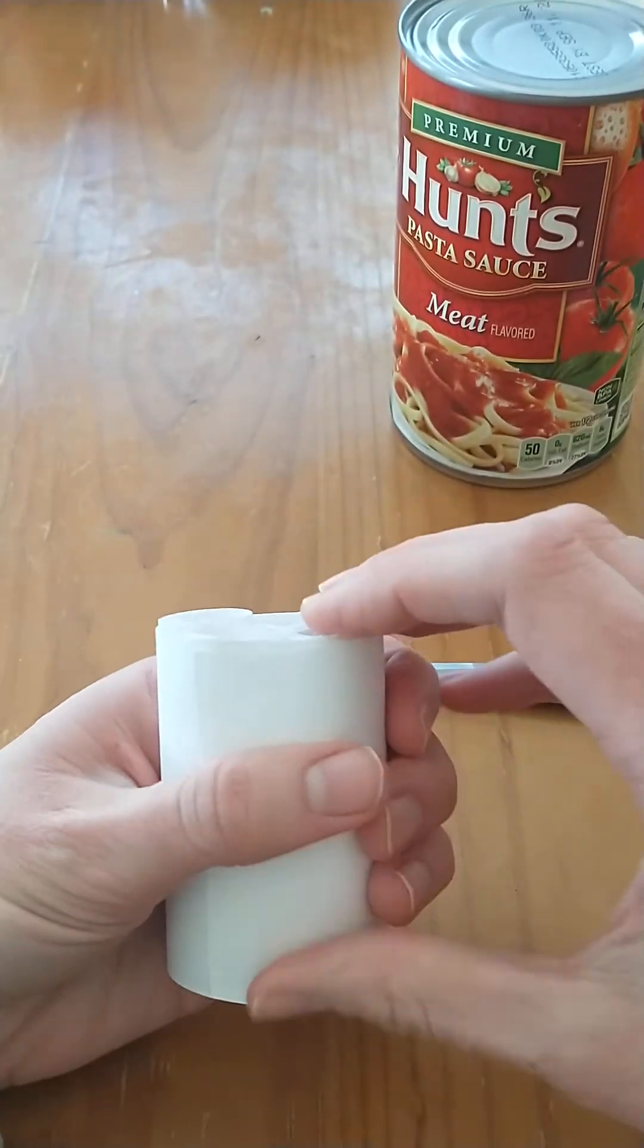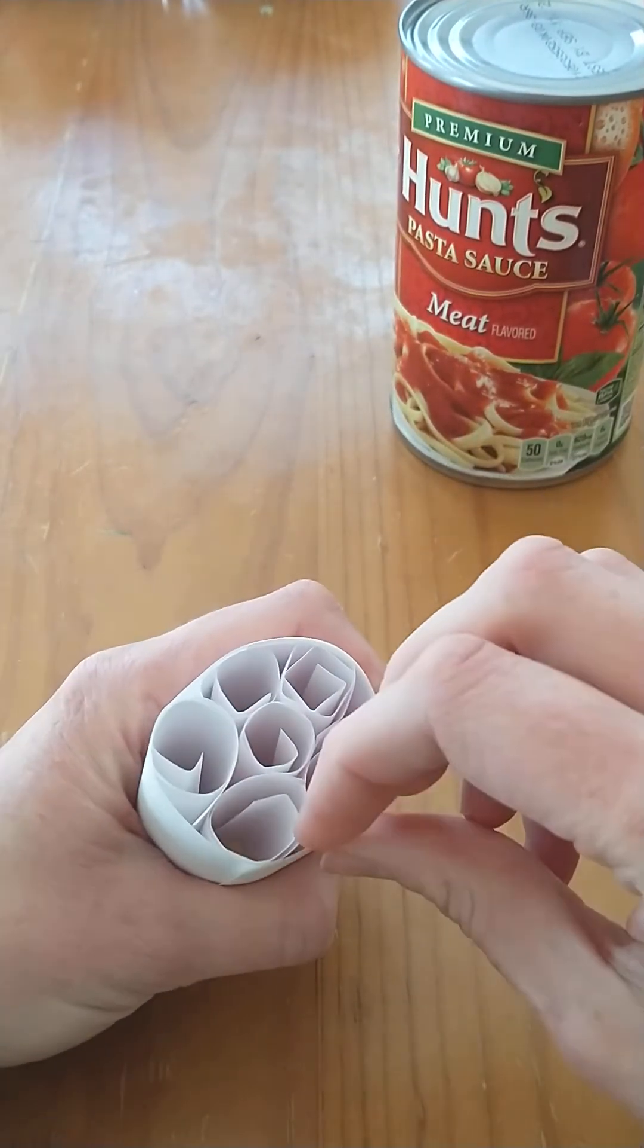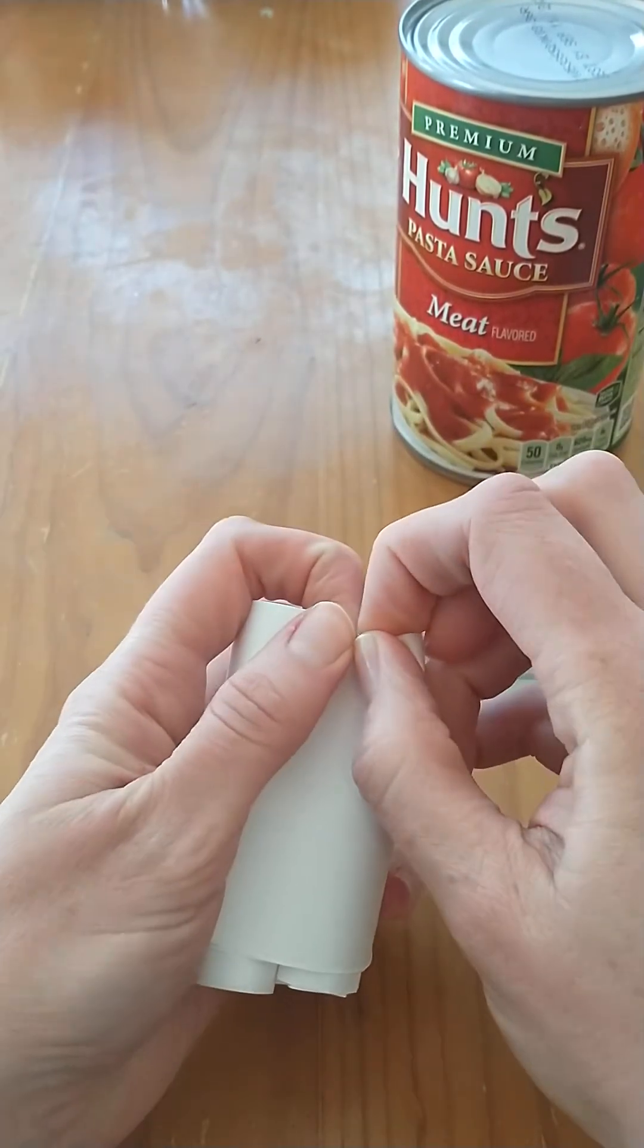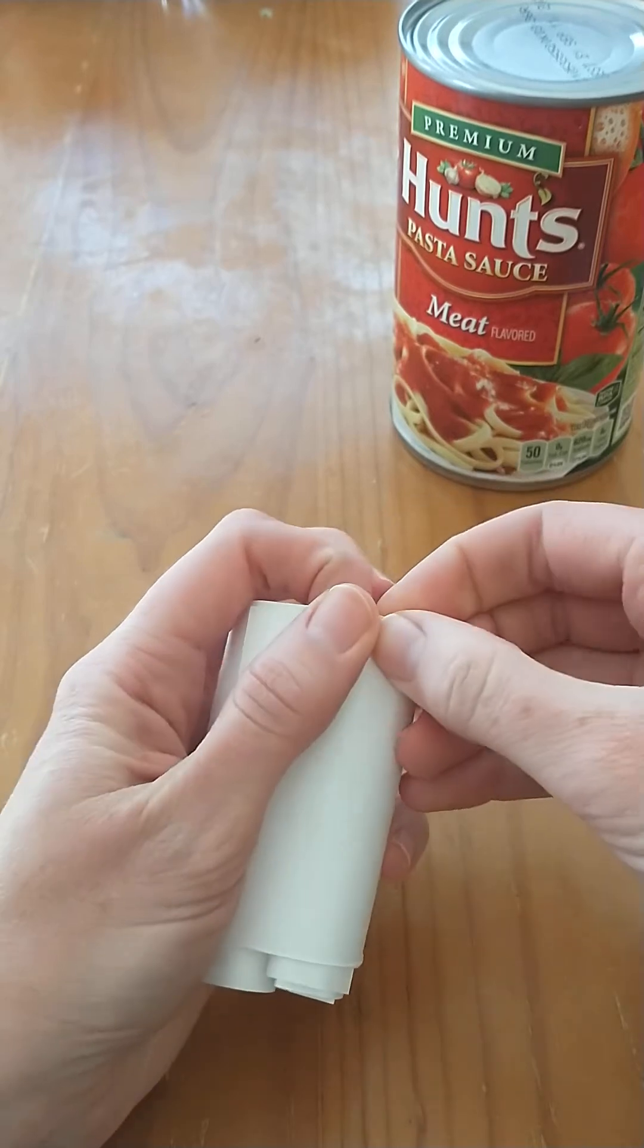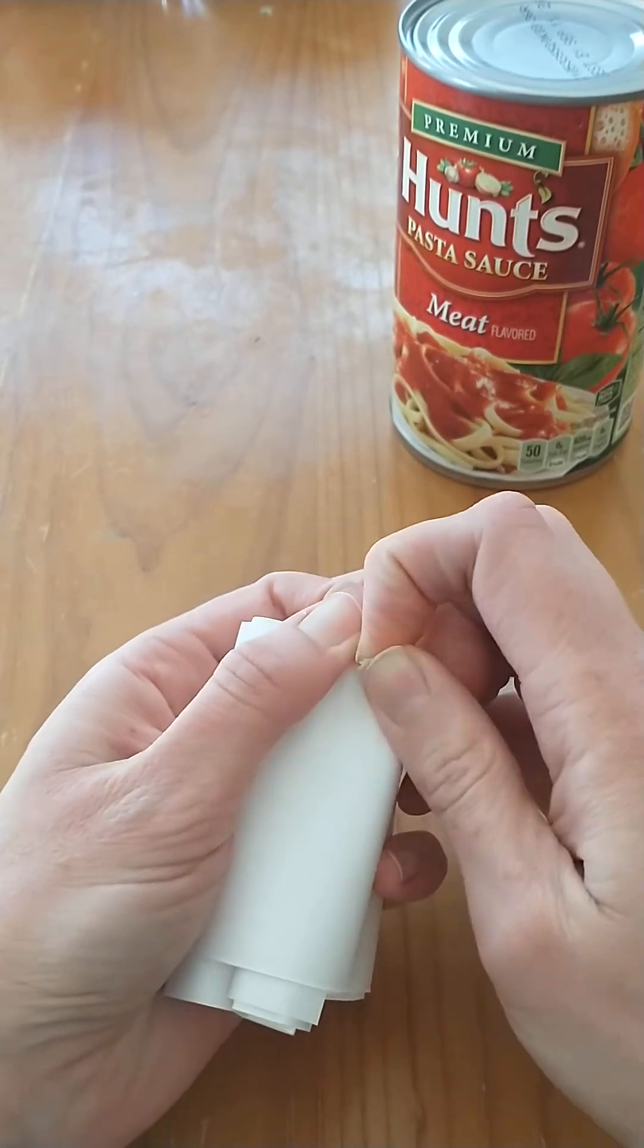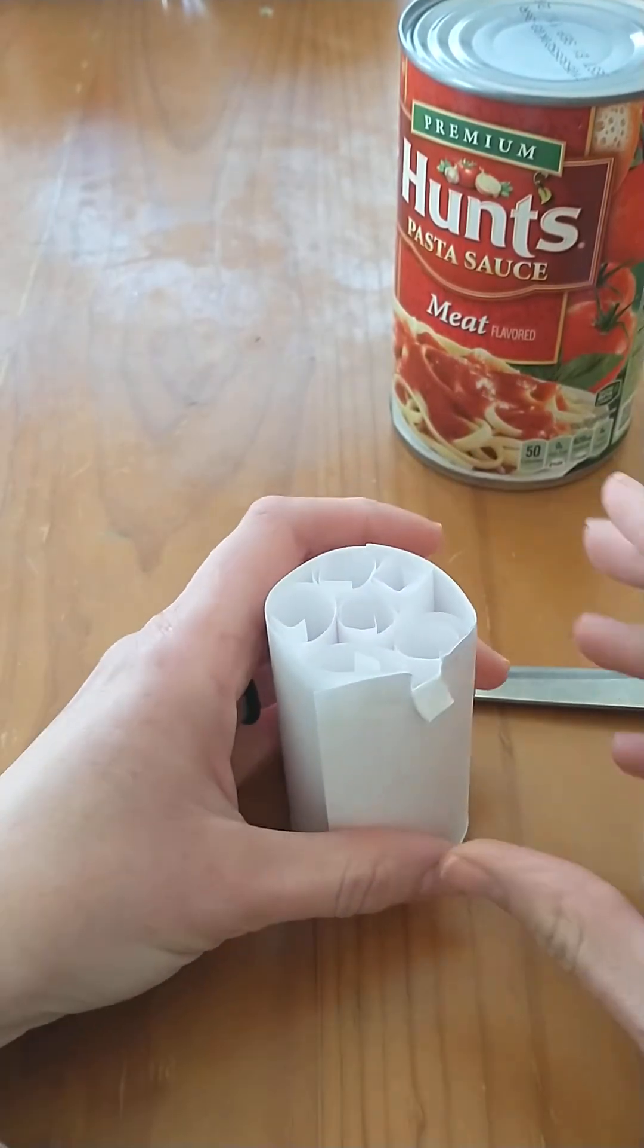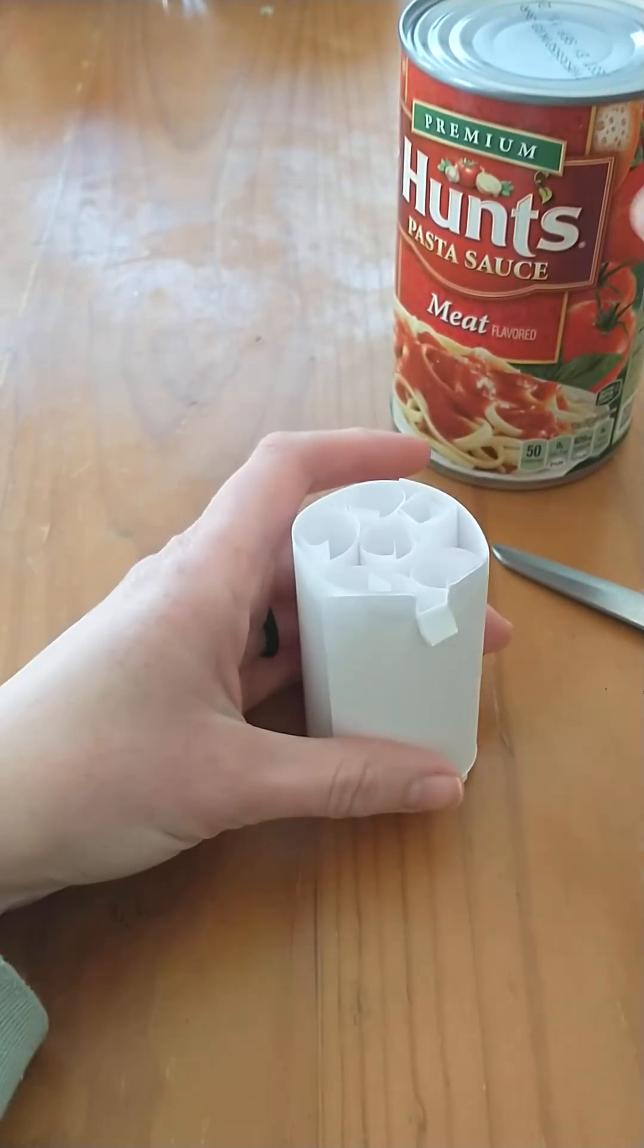Now, remember how I said no tape, no glue? Well, we still need these to be held together. So how we're going to get around that is going to do a little rip, a little rip, and fold it down. So that's going to hold all of our spirals together.